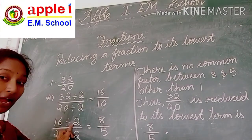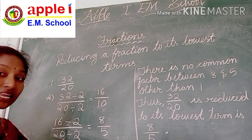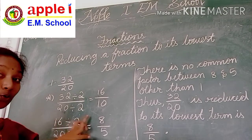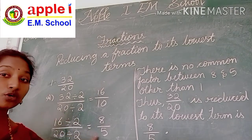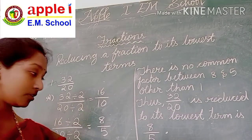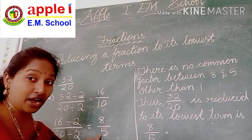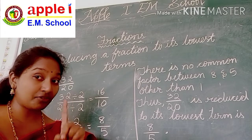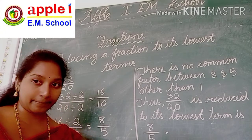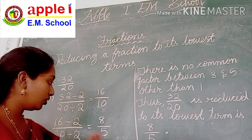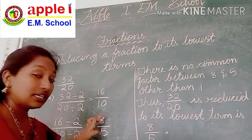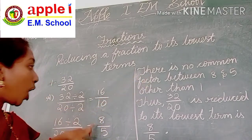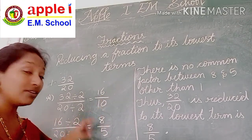See: 16 divided by 2, and 10 divided by 2 is 5. Now see 8 and 5. Again check — 8 and 5 will not come in any same table. So this 8 and 5 is the lowest term. There are no common factors between 8 and 5 other than 1.